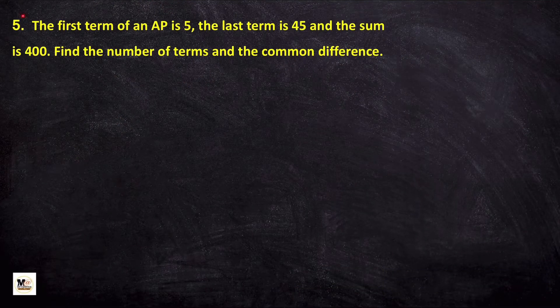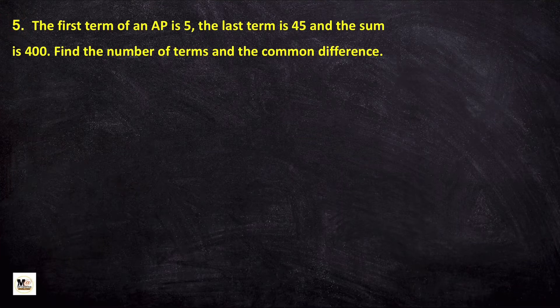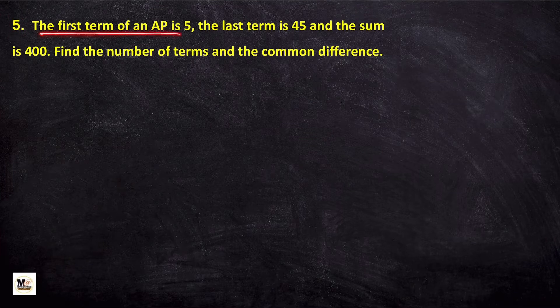The first term of an AP is 5, the last term of the AP is 45, and the sum is 400.